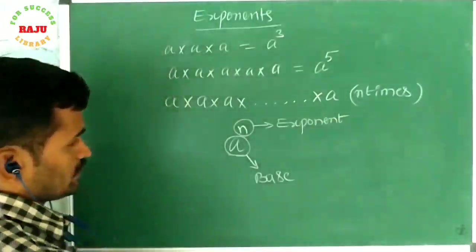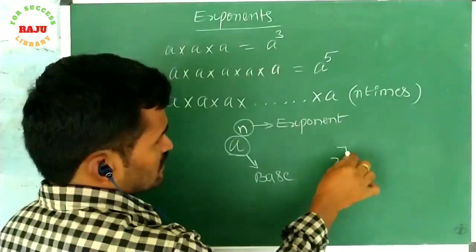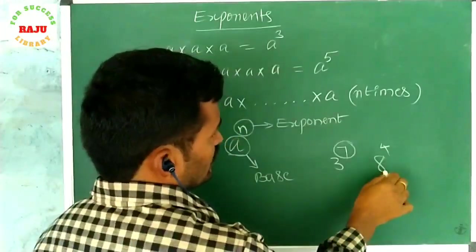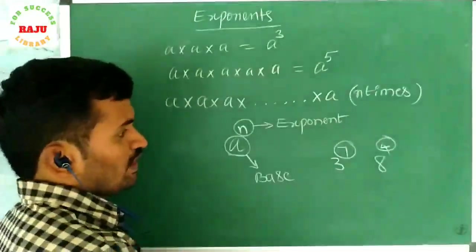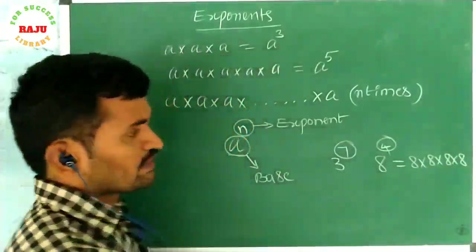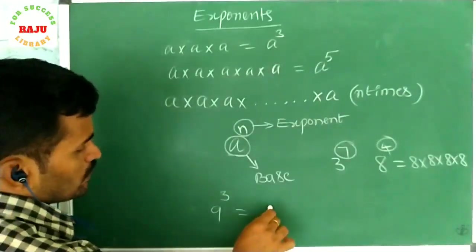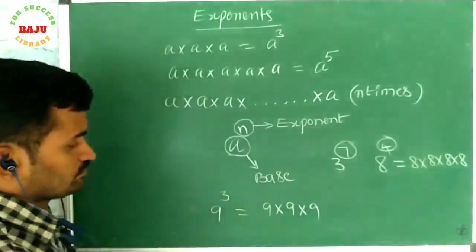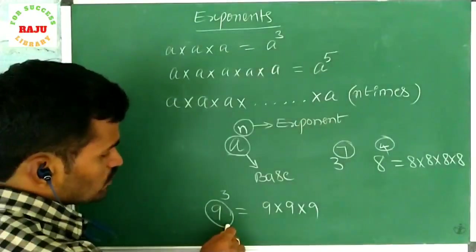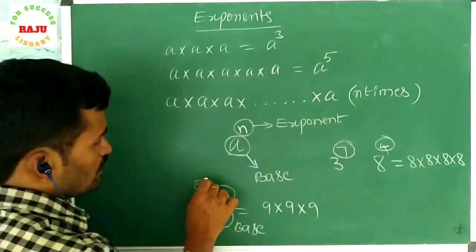Whatever you take — if you take 3 to the power 7, here 3 is the base and 7 is the exponent. If you take 8 to the power 4, here 8 is the base and 4 is the exponent. 8 to the power 4 means we are multiplying eight four times. If you take nine cube, that means we are multiplying nine three times — nine is the base and three is the exponent.